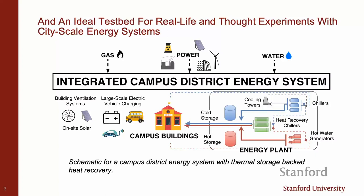Looking at this campus from the middle of the diagram: there are 150 to maybe 200 buildings. The buildings use electricity, heating in the form of hot water, and chilled water for cooling. The heating and cooling are produced on site at a place called the Central Energy Facility, which is roughly in that direction — the plant that John was talking about just now.